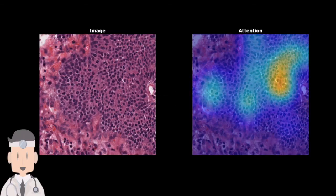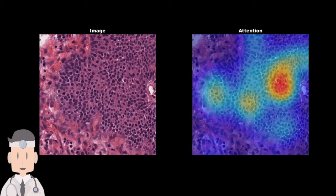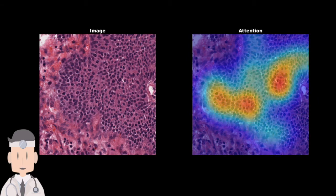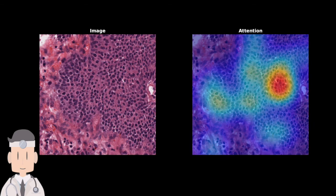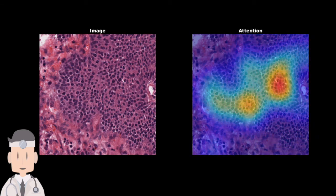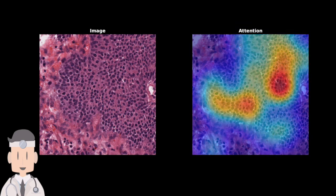The nuclei are moderately pleomorphic. The nuclei are crowded to a moderate degree. Polarity along the basement membrane is negligibly lost. Mitosis is rare throughout the tissue. The nuclei have inconspicuous nucleoli. Conclusion: Low Grade.